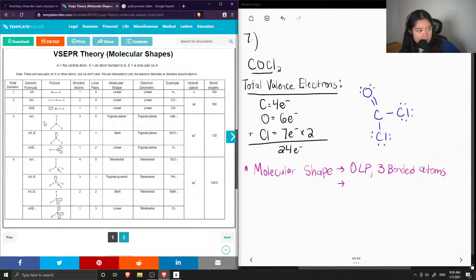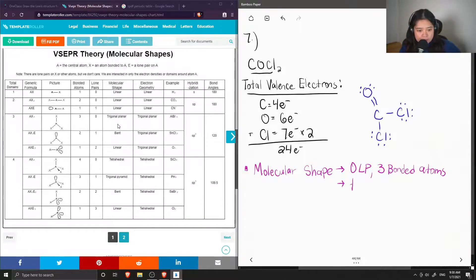So when we have three bonded atoms and zero lone pairs, the molecular shape is trigonal planar. And also it is sp2 hybridized. And the bond angle is 120 degrees.